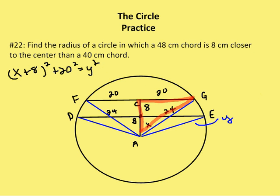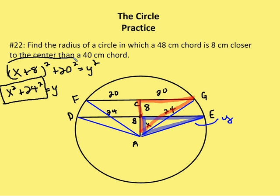And then my second right triangle is going to be, and let's do this in blue, is going to be EBA. And here I have X squared plus 24 squared is equal to Y squared. Well, since X plus 8 squared plus 20 squared is equal to Y squared, and X squared plus 24 is equal to Y squared, I can say that X squared plus 24 squared is equal to X plus 8 squared plus 20 squared. And now all I have to do is solve for x.